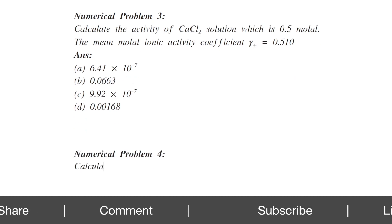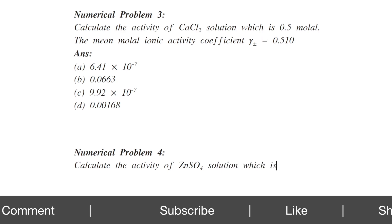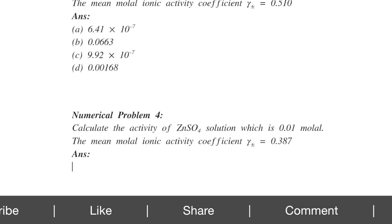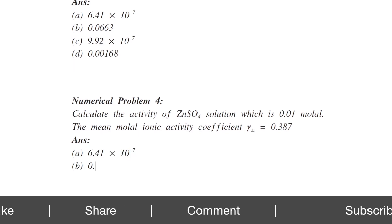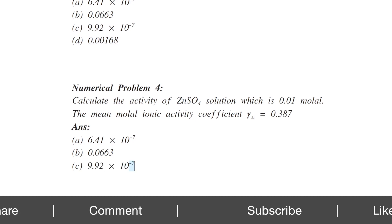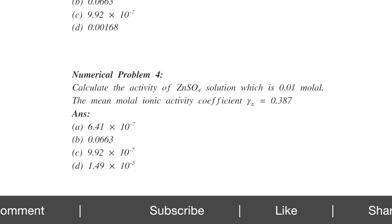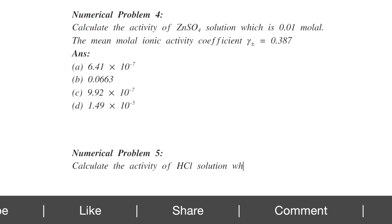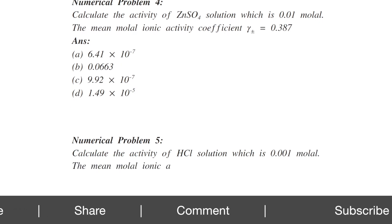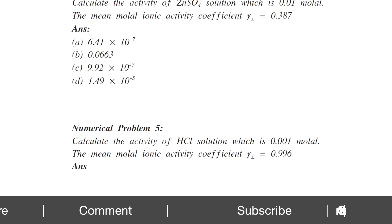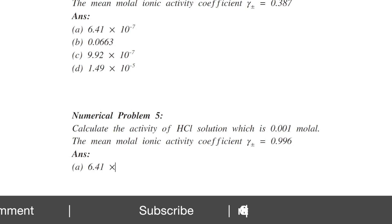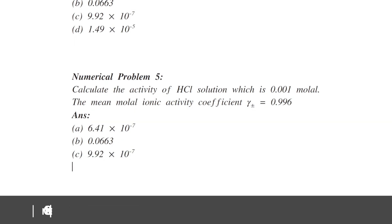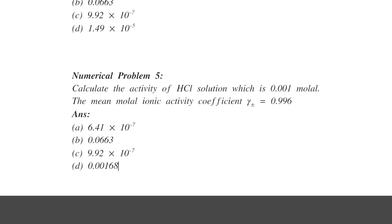Next: Calculate the activity of zinc sulfate solution that is 0.001 molal, with Gamma equals 0.387. Possible answers: A) 6.41×10⁻⁷, B) 0.0663, C) 9.92×10⁻⁷, D) 1.49×10⁻⁵. Also: Calculate the activity of HCl solution that is 0.001 molal, with Gamma equals 0.996. HCl is a uni-univalent electrolyte. Possible answers: A) 6.41×10⁻⁷, B) 0.0663, C) 9.92×10⁻⁷, D) 0.00168.